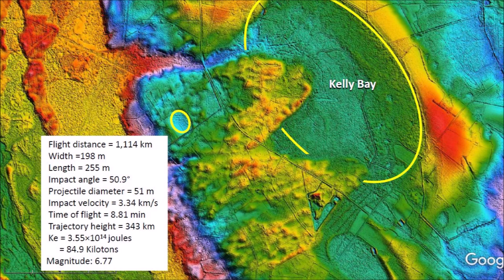The small bay has a width of 198 meters and a length of 255 meters. It was created by a projectile with a diameter of 51 meters and an impact velocity of 3.34 kilometers per second at an angle of 50.9 degrees. Its time of flight was 8.81 minutes. Its trajectory height was 343 kilometers above the surface of the earth and its impact energy was 84.9 kilotons of TNT, which would have caused seismic vibrations of magnitude 6.77.